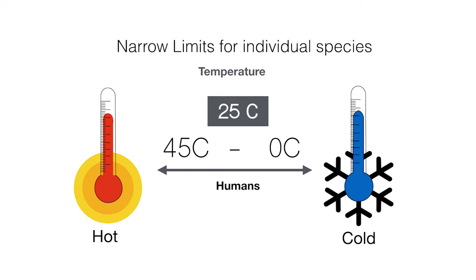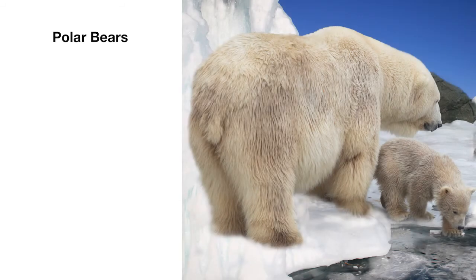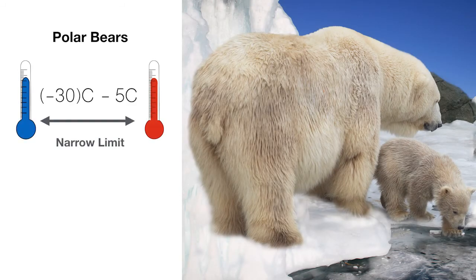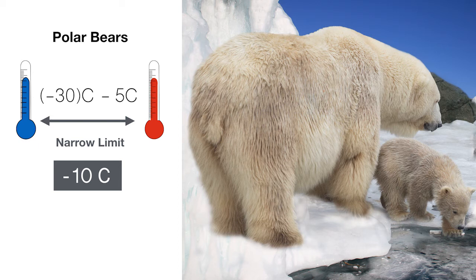Since humans are so fragile, let's have a look at something that can survive in much colder ranges — polar bears. Polar bears can live from negative 30 degrees to 5 degrees Celsius. So whilst polar bears would survive comfortably at around negative 10 degrees Celsius, this is still a narrow limit. Bringing a polar bear to somewhere like Australia without a whole lot of ice and snow would be like playing tennis with a fly swatter — you're not going to last very long.